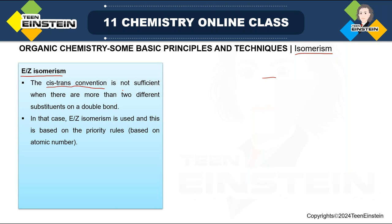We need to understand when to apply E-Z isomerism — when cis-trans is not sufficient. The condition is: there are more than two different substituents. With a C=C double bond there are four groups total. In cis-trans, two groups are the same — for example A, B on one carbon and A, B on the other. But in E-Z isomerism there are more than two different substituents: either all four are different (A, B, C, D), or three are different (A, B, C) with one repeated.